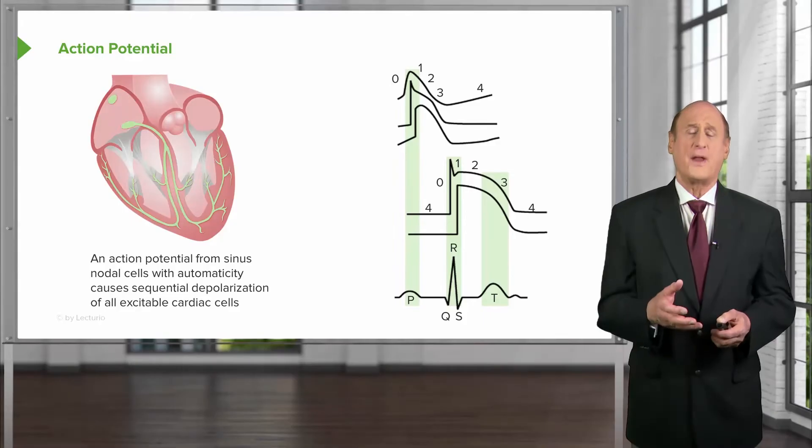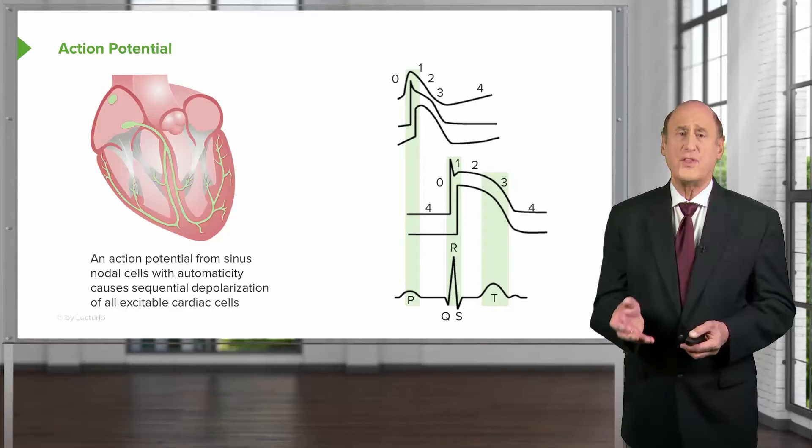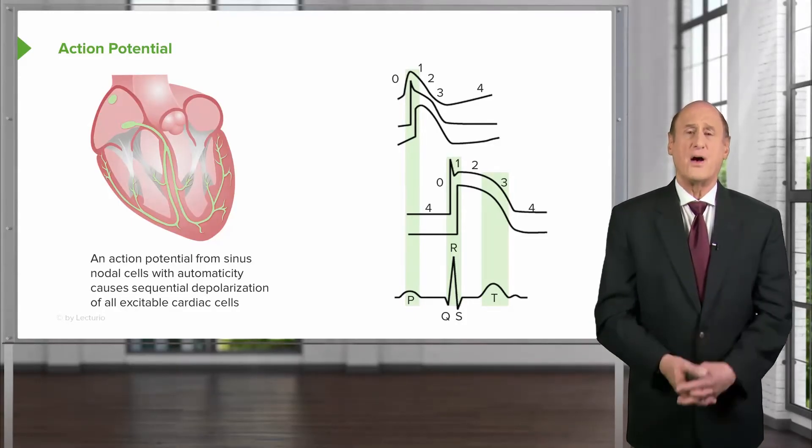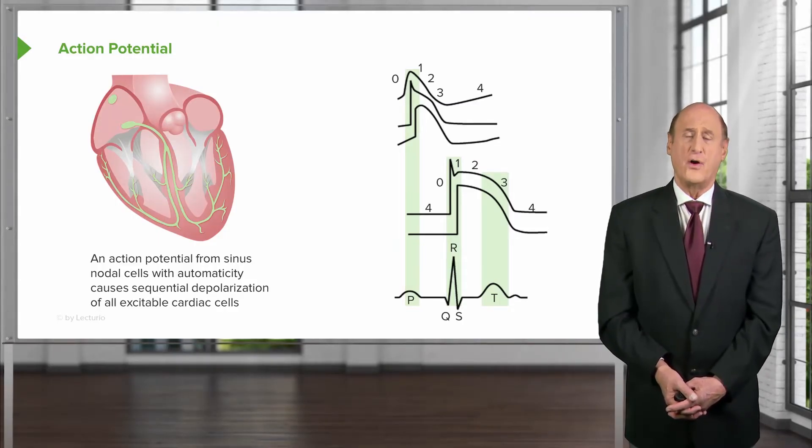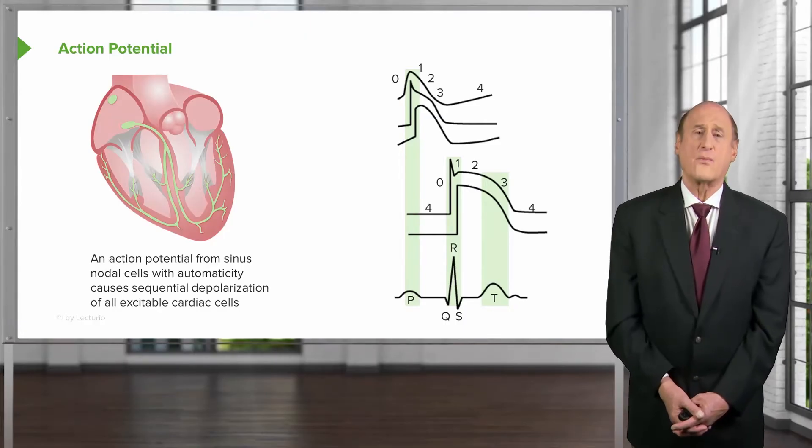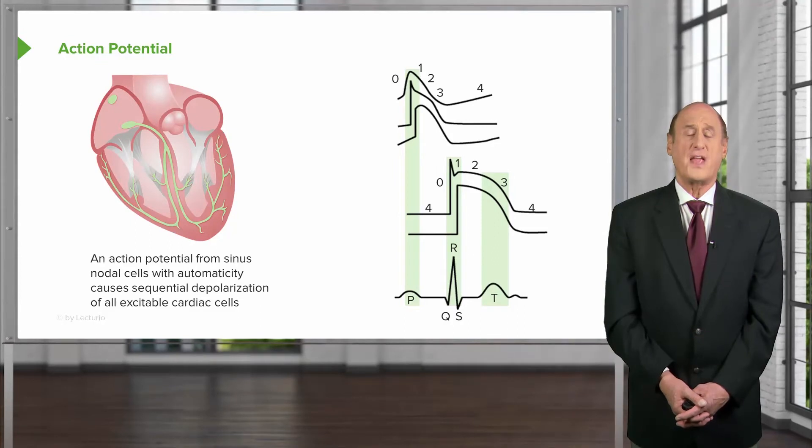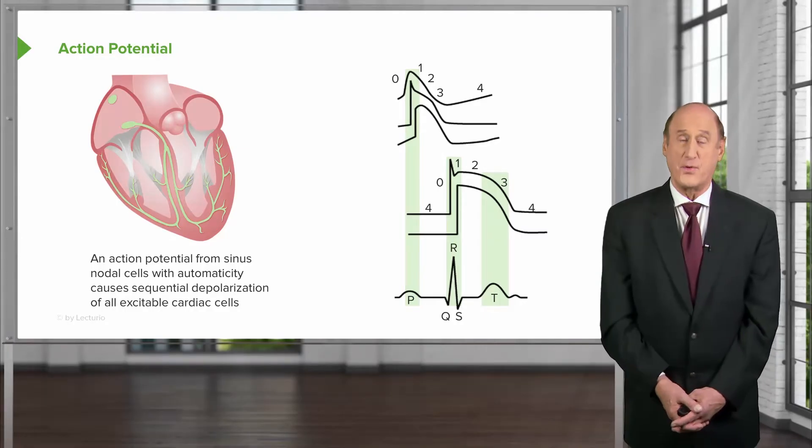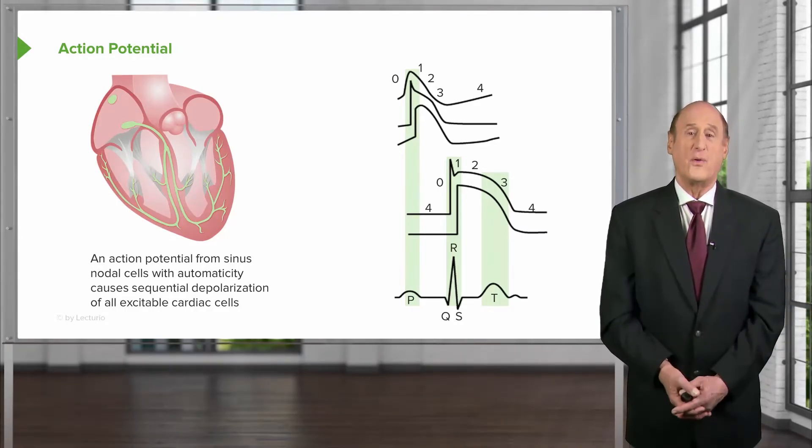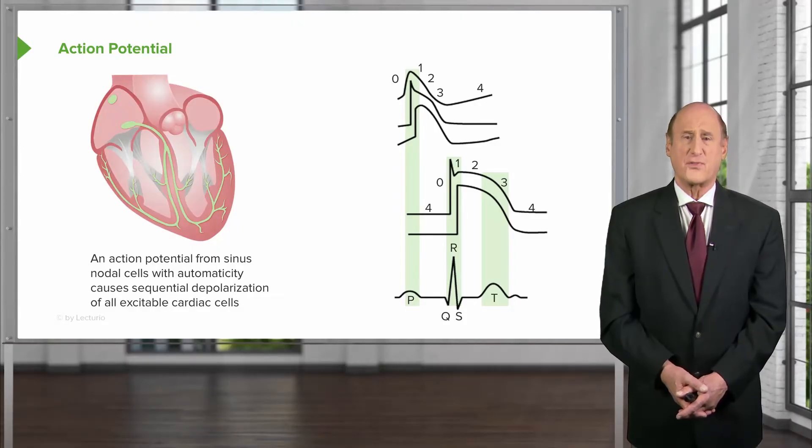And then what happens is the wave of electrical depolarization passes from the sinus node through the atria down into the septum between the two ventricles. There's a pause at the AV node, and that's the second little round green circle. Why a pause? Because if it went immediately into the ventricle, both the atria and the ventricle would be contracting at the same time. Not a good idea because then nothing would go out the aorta. There would be no effective cardiac output. So there's a pause while the atria finishes its contraction, filling the ventricles.